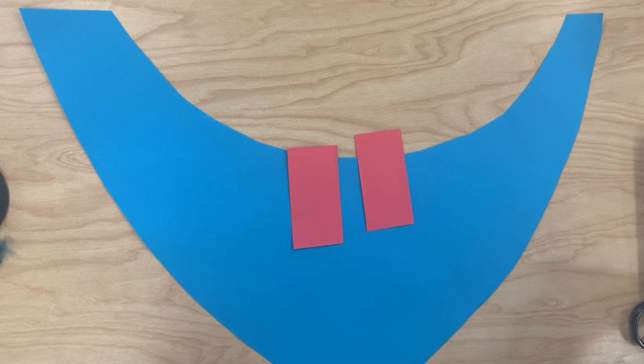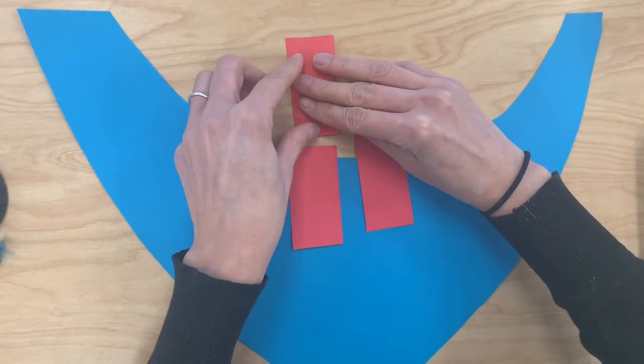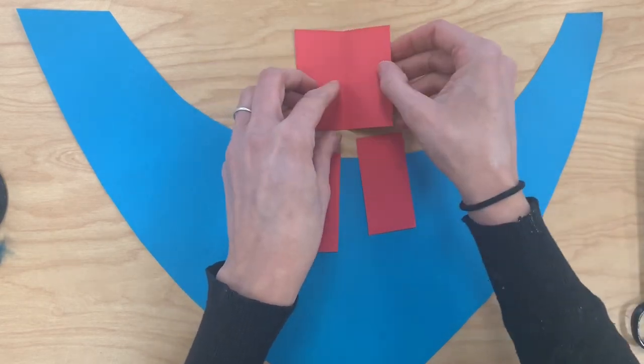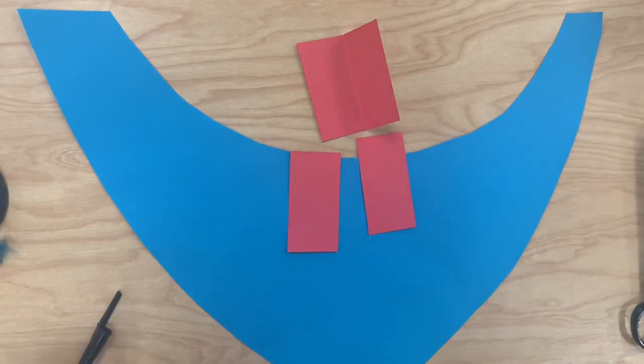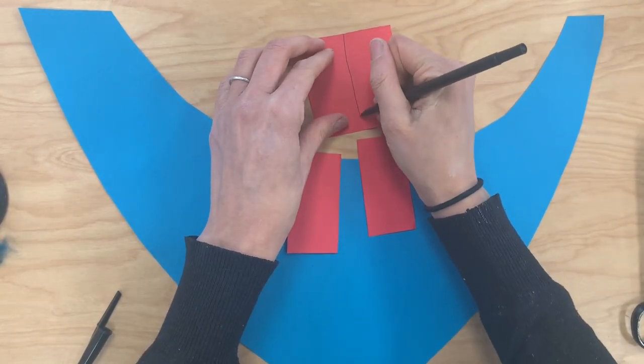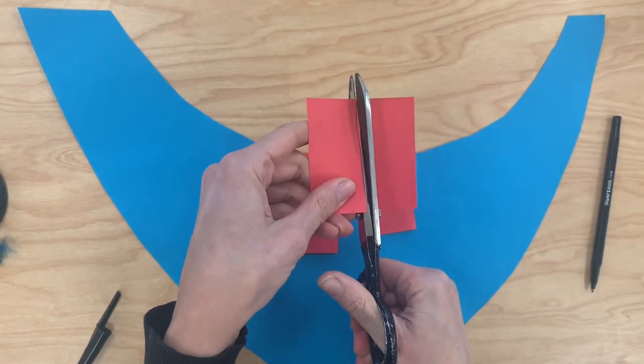Now if you have trouble seeing that crease then once you fold it you can actually take a pencil or marker and then mark where that crease is before you cut it. So here I can just put a little line down there where the crease was and then cut on that line.